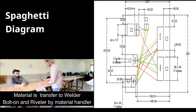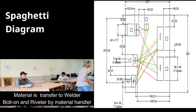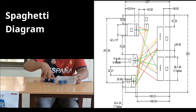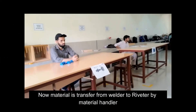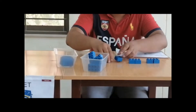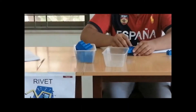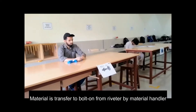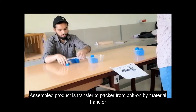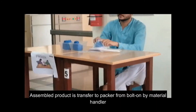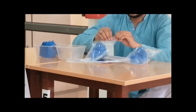Material is then handed to the welder for welding and to bolt-on. After that, it goes to the riveter. All of these workers perform their tasks. Then the material transfers from the welder to the riveter, and subsequently to bolt-on.